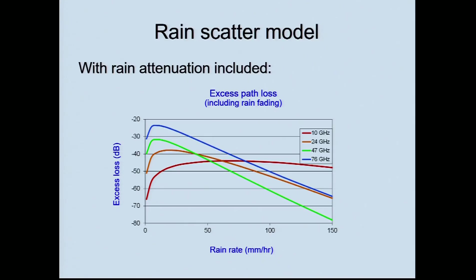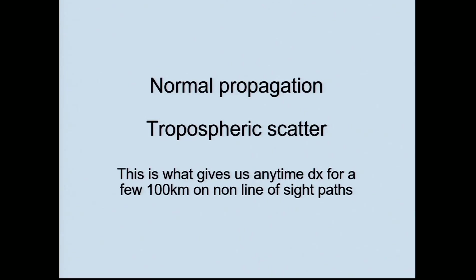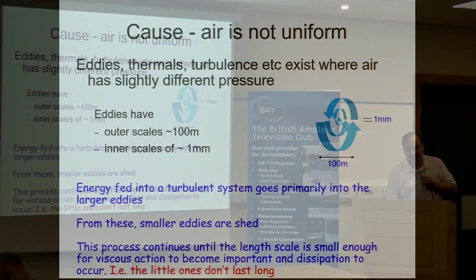The normal mode of propagation is what we call troposcatter — that's what gives us our any-time DX, non-line-of-sight paths up to a few hundred kilometres. That's what most contacts are made by probably. The cause of it is that air is not uniform — we have turbulence in the atmosphere. Wherever you've got turbulence with slightly different levels of water vapor, temperature, and pressure, you can get scattering of wave fronts.